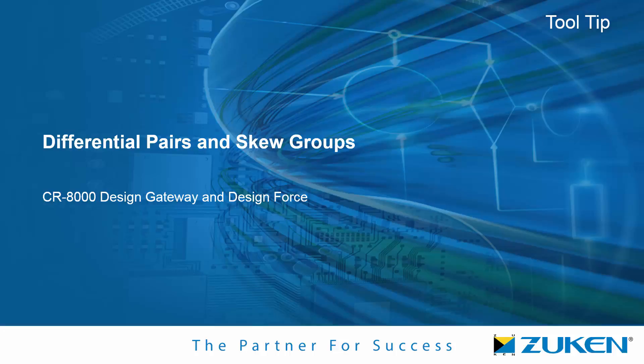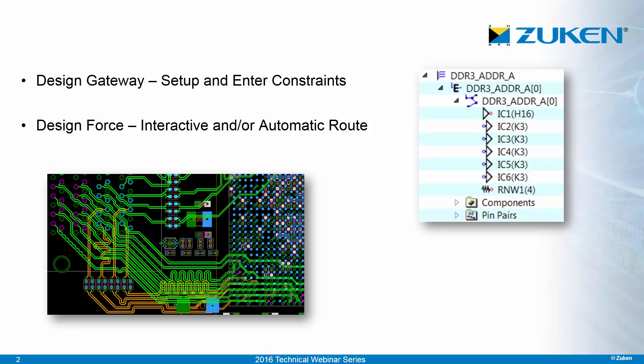This tutorial will demonstrate the CR8000 Design Gateway and Design Force process for working with differential pairs and skew groups. We'll first use Design Gateway to set up and enter constraints for the differential pairs and skew groups, and then we'll use Design Force to both interactively route and automatically route both items.